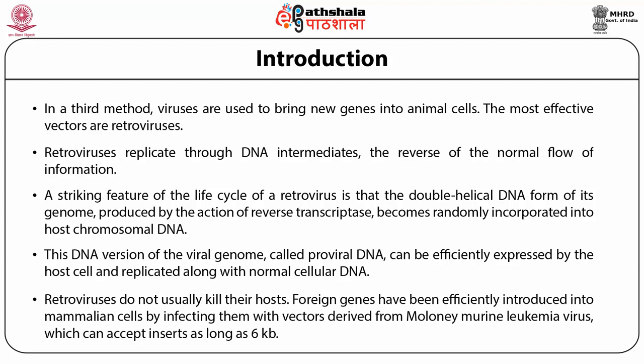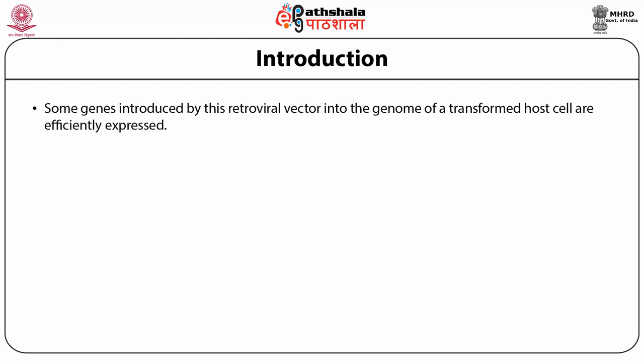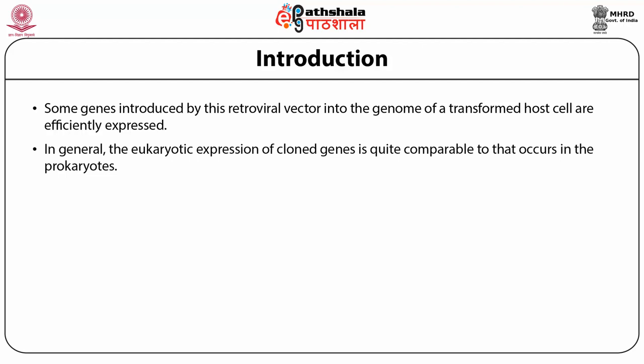Foreign genes have been efficiently introduced into mammalian cells by infecting them with vectors derived from Moloney murine leukemia virus, which can accept inserts as long as 6 Kb. Some genes introduced by retrovirus vectors into the genome of a transformed host cell are efficiently expressed. In general, eukaryotic expression of cloned genes is quite comparable to that occurring in prokaryotes.